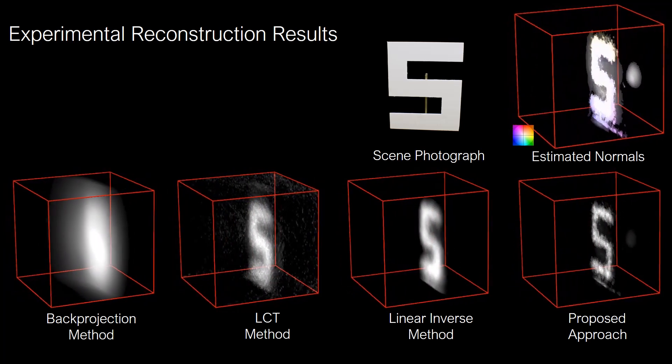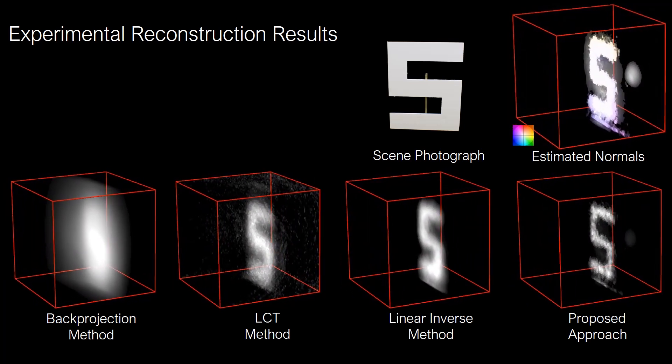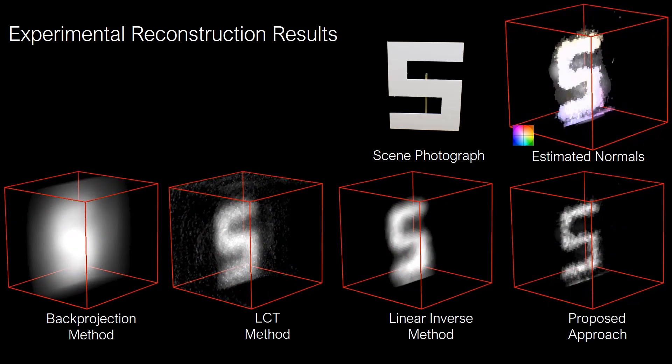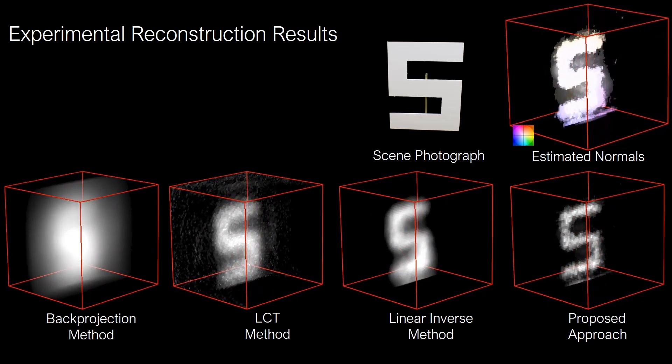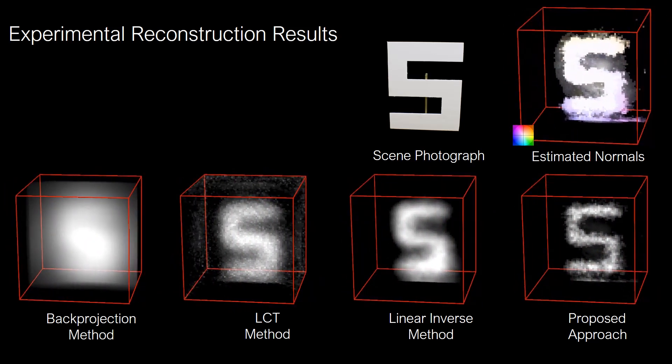Here is a diffuse object with estimated normals where the proposed method outperforms prior approaches due to a more accurate non-isotropic forward model. The normals estimated by the proposed method are shown in the top right.